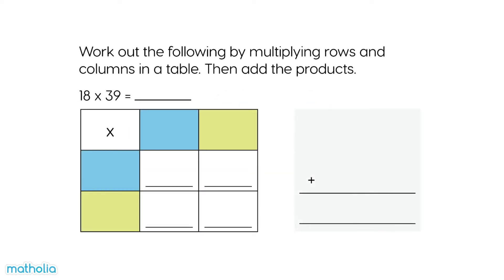Work out the following by multiplying rows and columns in a table, then add the products. Break the numbers into their place values and write them in the table. 18 is 10 and 8. 39 is 30 and 9.